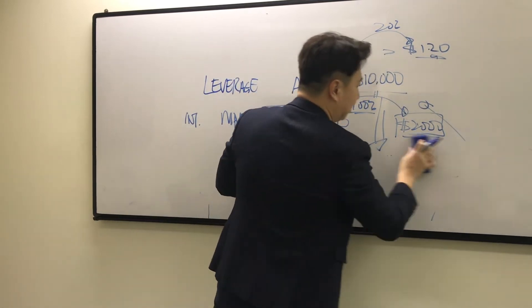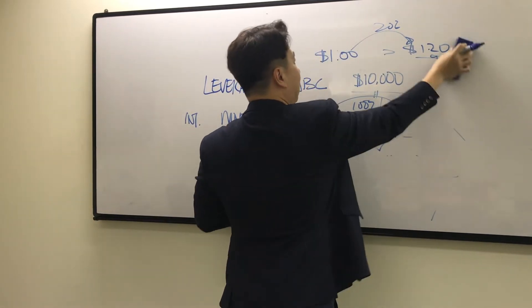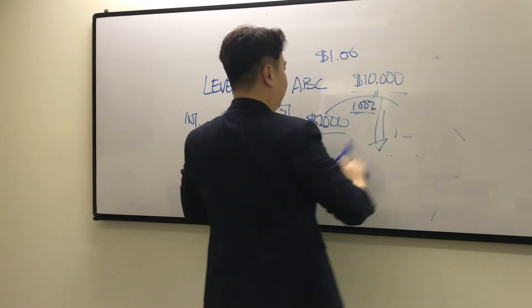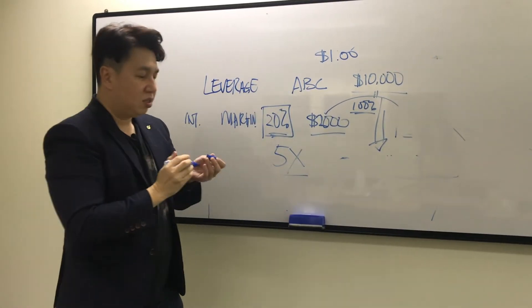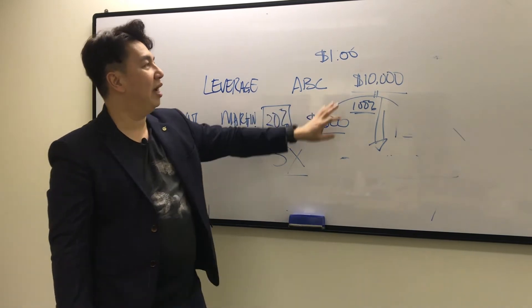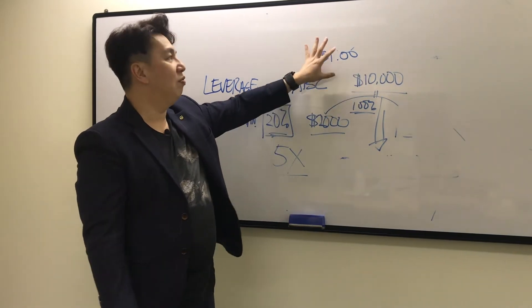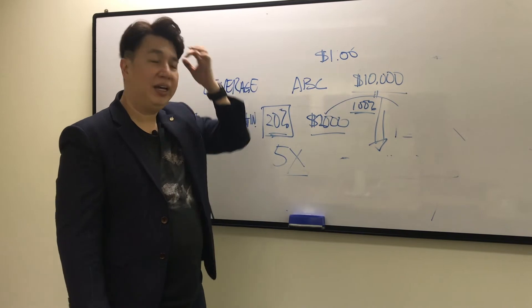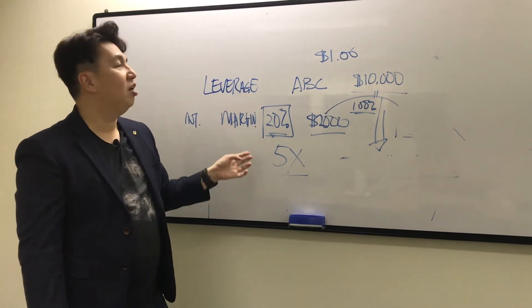We are buying this stock with leverage five times. We're going to buy $10,000 worth of this stock at $1. However, most of the time when you put in $2,000, you're not going to just buy $10,000 worth of stocks.